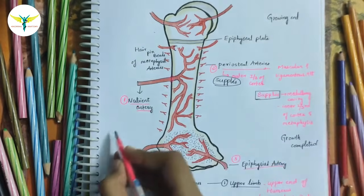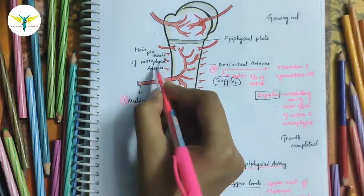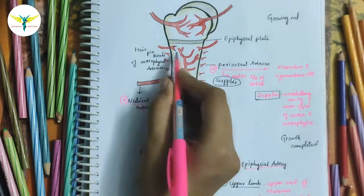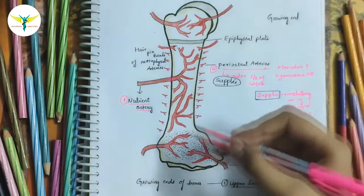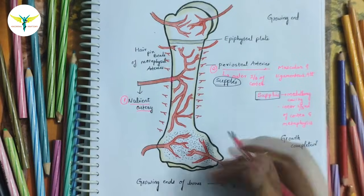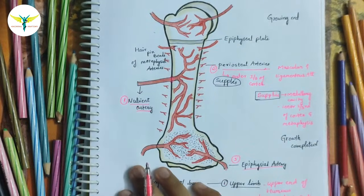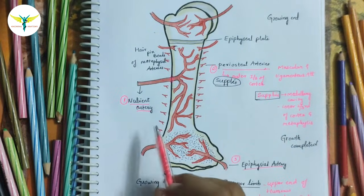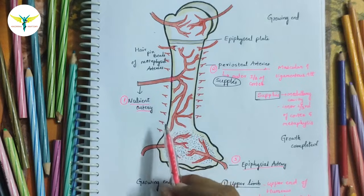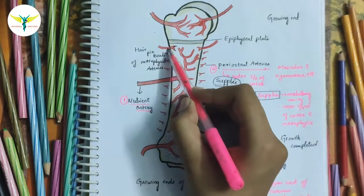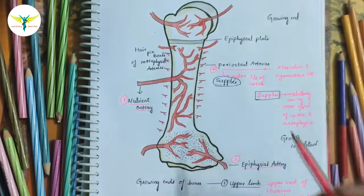Coming to the metaphyseal arteries — these are derived from the neighboring systemic vessels. They pass directly into the metaphysis and reinforce the metaphyseal branches from the primary nutrient artery.